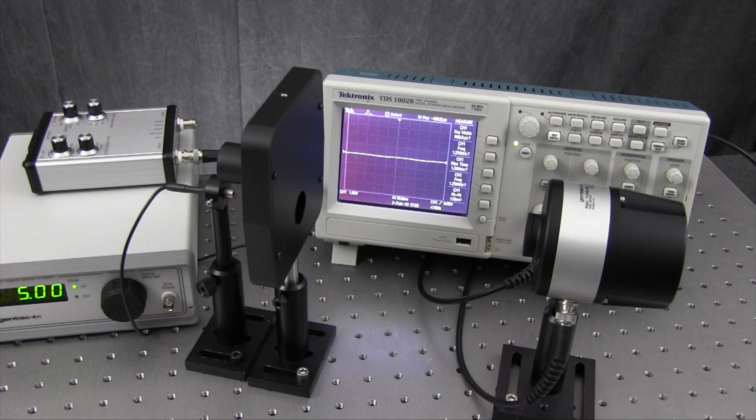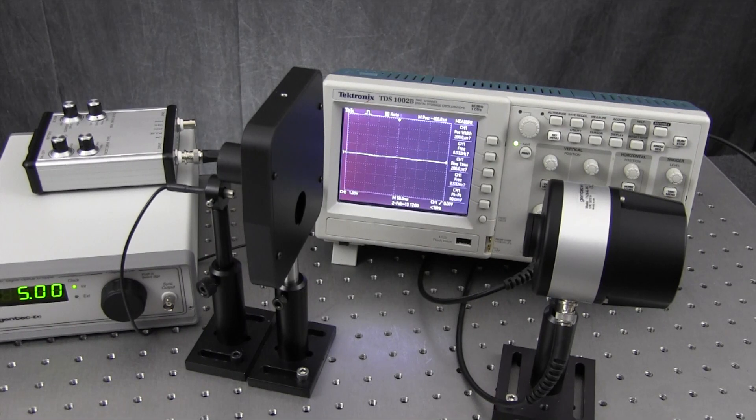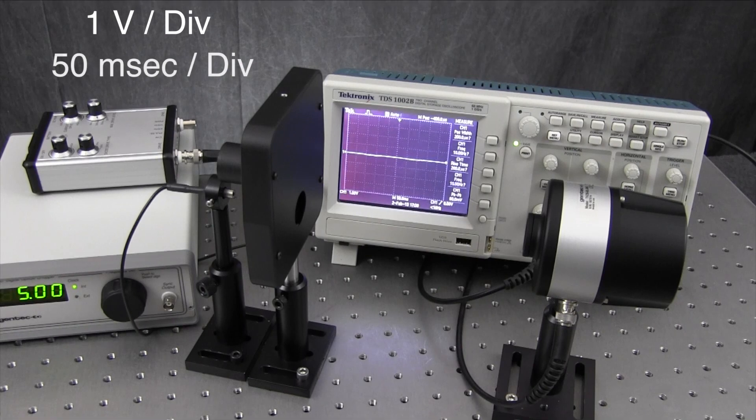I've waited about five minutes to allow the Terahertz 5i probe to come to thermal equilibrium, and you can now see that the baseline voltage is near zero. I've changed the voltage sensitivity to one volt per division and the time base to 50 milliseconds per division.